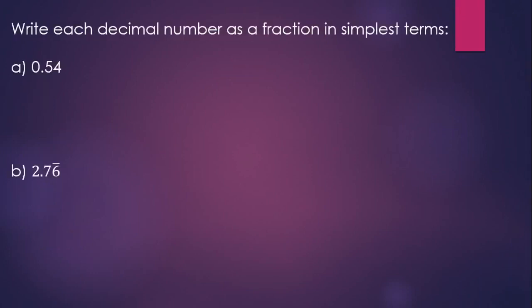Write each decimal number as a fraction in simplest terms. For the first one, since it's a terminating decimal, we could say 54 hundredths and write 54 hundredths and then simplify the fraction to get 27 fiftieths.